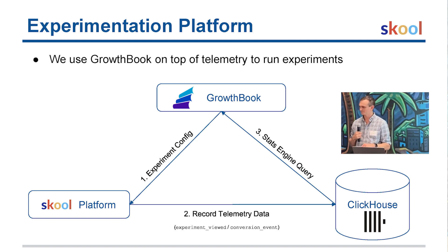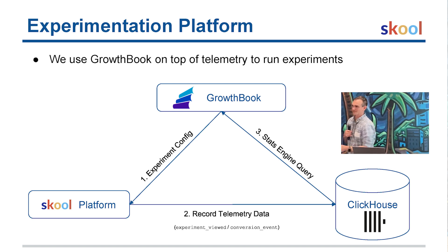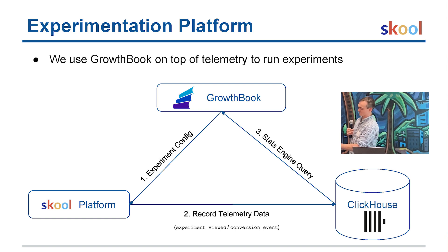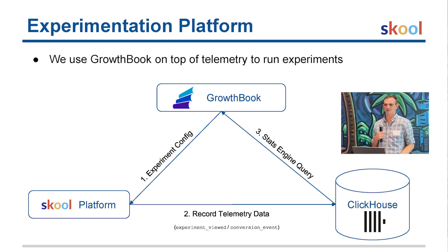In response to a question about the data flow: we have a front-end client telemetry page sending telemetry to our telemetry server, which then proxies it into a couple of places — the primary one being ClickHouse. So we're routing traffic from the client through one spot rather than sending a ton of traffic from the client directly to all the systems we need, with ClickHouse being the main destination.